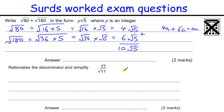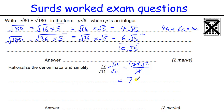Now, rationalising the denominator — another skill we need. To rationalise the denominator, we multiply top and bottom by the same thing on the denominator to get rid of the square root. When we do a square root times the same square root, we just get the number. So we get 77 root 11, and 11 goes into 77 seven times, giving us 7 root 11. You get one mark for the intermediate step, but you need to simplify to get the second mark.